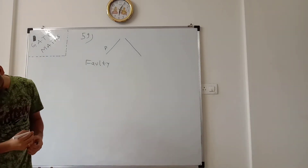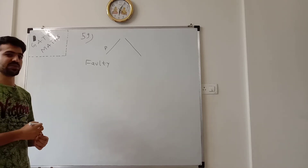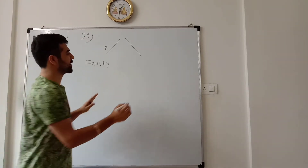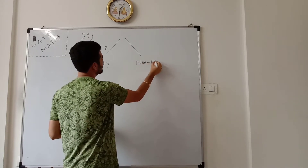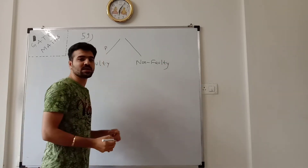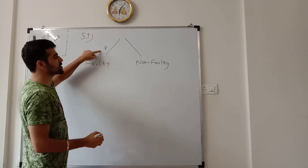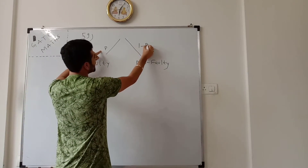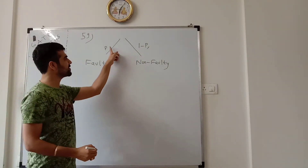The company therefore subjects each computer to a testing process. A product can be faulty or non-faulty, so there are two chances. If it is faulty then the probability is p, and if it is not faulty then it is 1 minus p, because total probability is 100%.